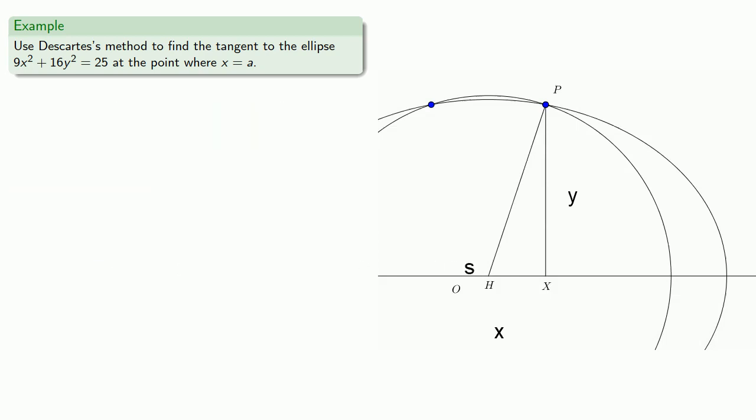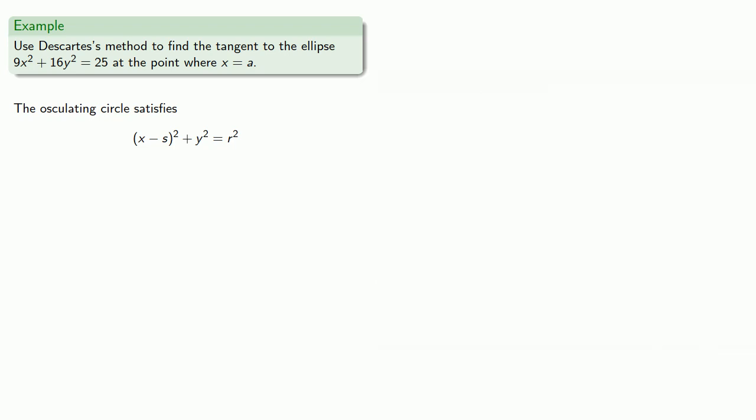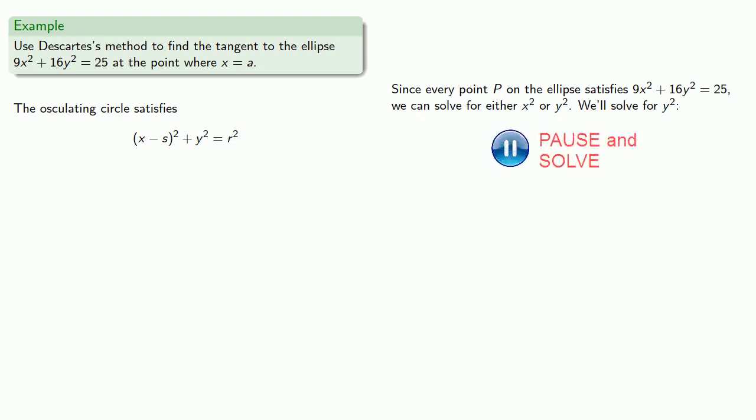So, again, there's a right triangle here, so the Pythagorean theorem applies. And in fact, because we have an osculating circle, all points on the osculating circle have to satisfy this equation. Now, since every point p on the ellipse satisfies the equation of the ellipse, we can solve for either x squared or y squared. And we'll solve for y squared. Replacing this in our equation, doing a bunch of algebra...